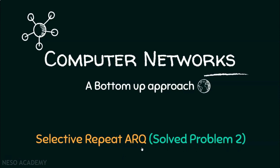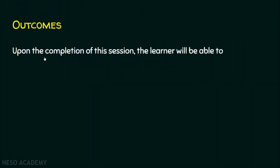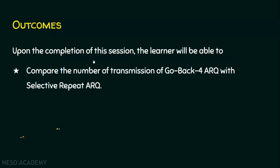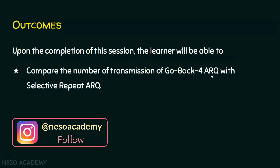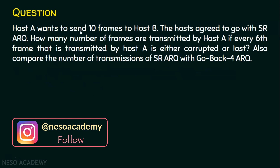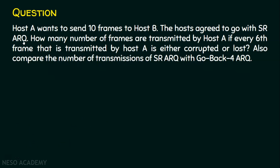Let's see solved problem number two in selective repeat ARQ. The learning outcome for today's session: upon completion, the learner will be able to compare the number of transmissions of Go Back N ARQ with Selective Repeat ARQ. The question is: Host A wants to send 10 frames to Host B using Selective Repeat ARQ protocol. How many frames are transmitted by Host A if every sixth frame transmitted is either corrupted or lost? Also, compare the number of transmissions of Selective Repeat ARQ with Go Back N ARQ.